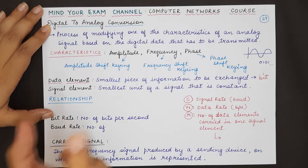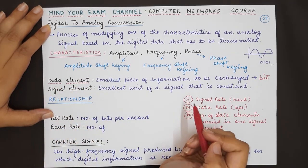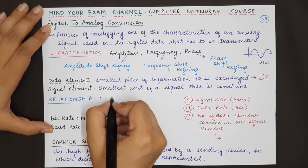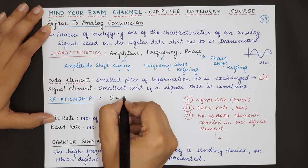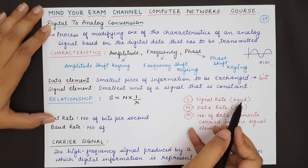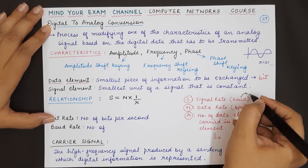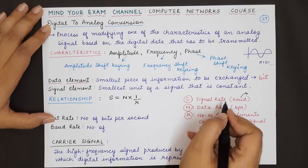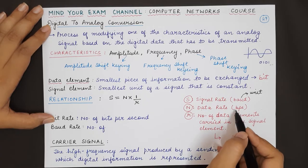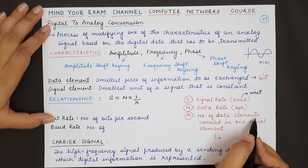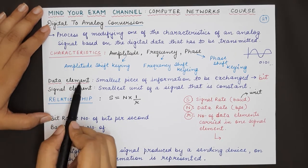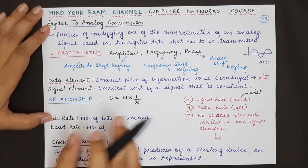The signal element is the smallest part of the analog signal that remains constant — the part which carries the data element. The relationship between signal element and data element is given by the formula: S = N × (1/R), where S is the signal rate in baud, N is the data rate in bits per second (bps), and R is the number of data elements carried in one signal element.